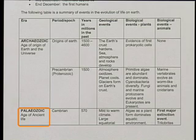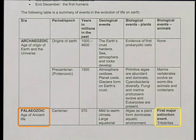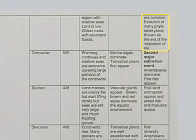The next era is the Paleozoic. Here, algae as plants dominates the aquatic environment — they have chlorophyll and can photosynthesize. The first major extinction event occurs in this era. Trilobites are now common, and the evolution of many phyla takes place — this is known as the 'explosion of life.'